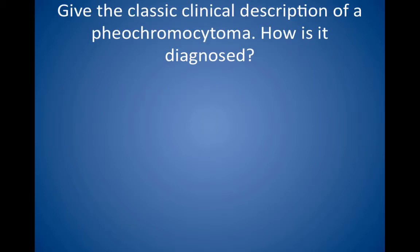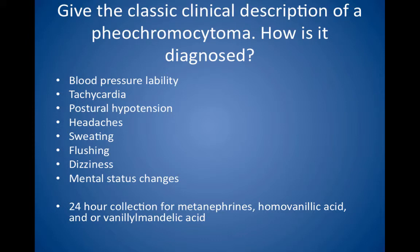Give the classic clinical description of a pheochromocytoma. How is it diagnosed? Look for wild swings in blood pressure, with some measurements being dangerously high. Tachycardia, postural hypotension, headaches, sweating, flushing, dizziness, mental status changes, and/or a feeling of impending doom, such as a panic attack. The screening test is a 24-hour urine collection for metanephrines, homovanillic acid, and/or vanillylmandelic acid, which are catecholamine breakdown products abnormally elevated in the urine. If levels are high, order an abdominal CT scan to look for an adrenal mass. Surgical tumor removal is the treatment of choice after stabilization with alpha blockers and then beta blockers.